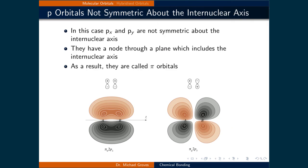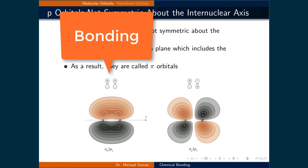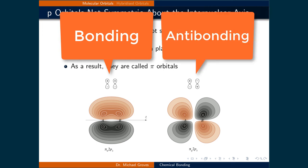Since we said that the z-axis is the internuclear one, then the px and py orbitals are perpendicular to this axis. They can form the other type of molecular orbital, pi orbitals. When these orbitals overlap constructively, a bonding orbital is formed, and if they overlap destructively, an antibonding orbital occurs.